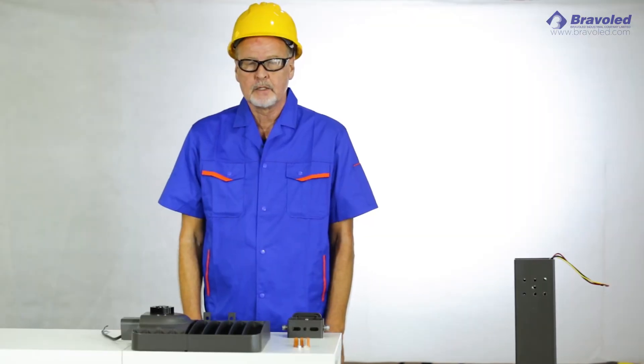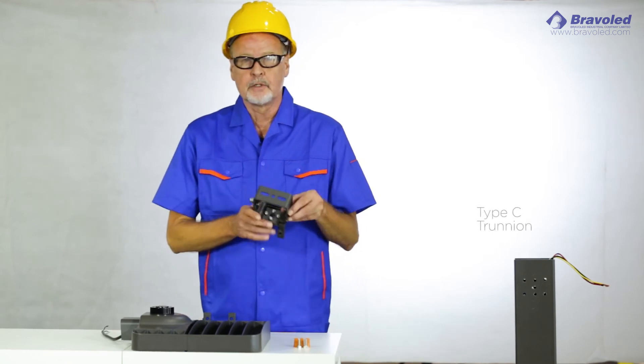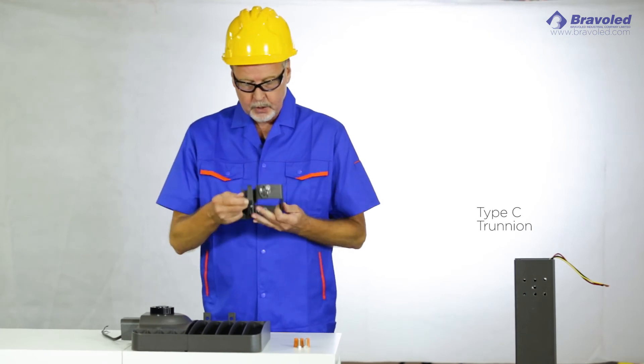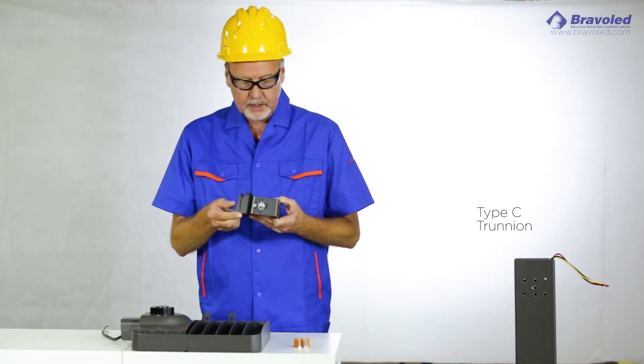This is a Bravo LED shoebox parking lot light, and we are going to show you mounting option C, also known as a trunnion bracket. Shown here, is in a fixed position, which can be mounted several ways.